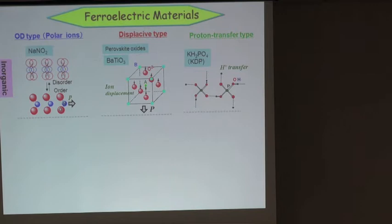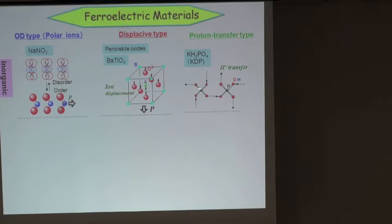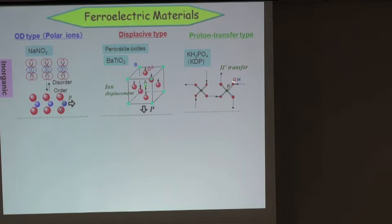Barium titanate is a typical example demonstrating the importance of the Berry phase concept. Another type is KDP: the PO4 unit is originally centrosymmetric, bonded by protons. The protons displace to one unit, causing distortion and polarization. Originally people considered a simple proton tunneling model, but the proton is coupled to distortion of the PO4 unit. There are still tunneling issues — the coupled mode of the proton and PO4 deformation is important.